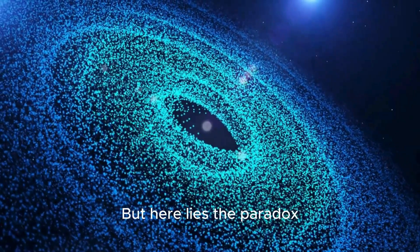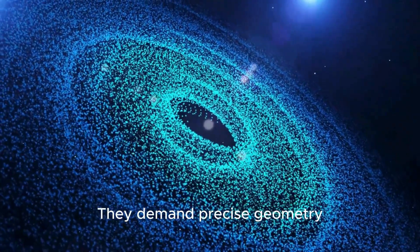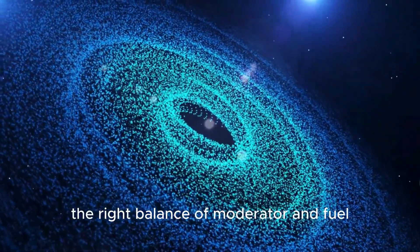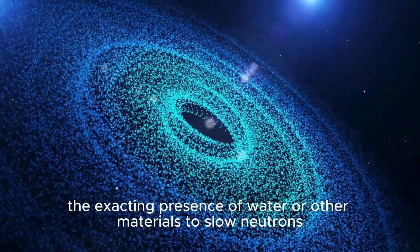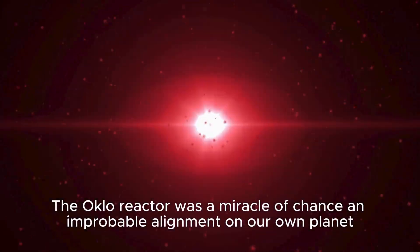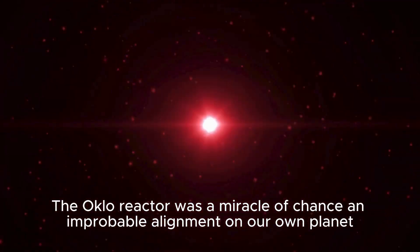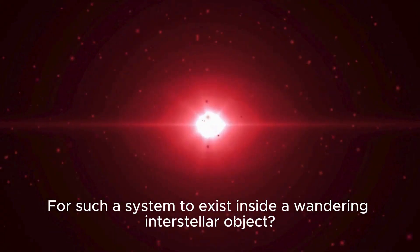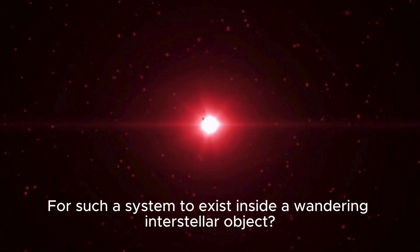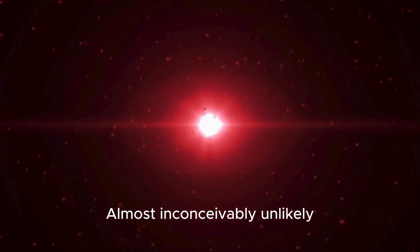But here lies the paradox. Natural reactors are fragile. They demand precise geometry, the right balance of moderator and fuel, the exacting presence of water or other materials to slow neutrons. The Oklo reactor was a miracle of chance, an improbable alignment on our own planet. For such a system to exist inside a wandering interstellar object? Possible, yes. Probable. Almost inconceivably unlikely.